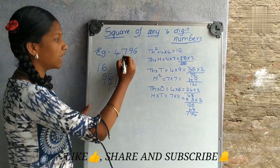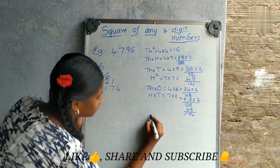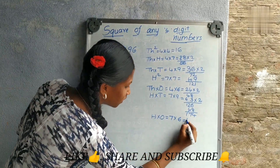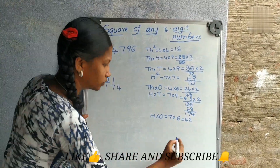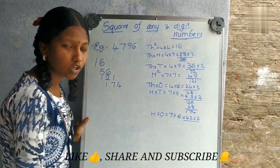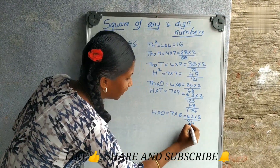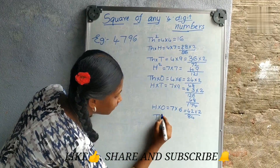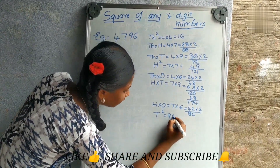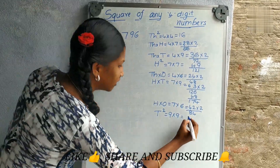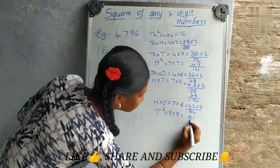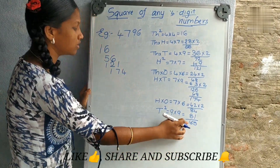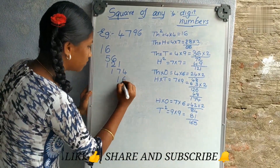Now we have to multiply the hundreds digit by the ones digit. Multiply the product with 2: two twos are 4, two fours are 8. Now write the square of the tens digit: 9 squared equals 9 into 9 — 9 nines are 81. Add these two numbers: 4 plus 1 is 5, 8 plus 8 is 16. Write 165 here.